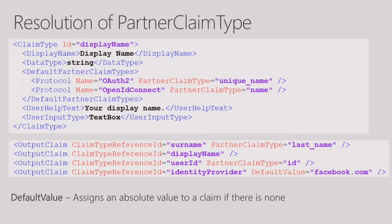If a partner claim type is not declared next to the claim type reference ID, then it goes back to the claim schema and tries to find a default partner claim type for that particular protocol. So in the case of 'display name' dealing with OpenID Connect, it'll take 'name' because it exists in the default. If the default didn't exist — if you removed the section called 'default partner claim types' — then 'display name' itself becomes the partner claim type. That's how that resolution works.